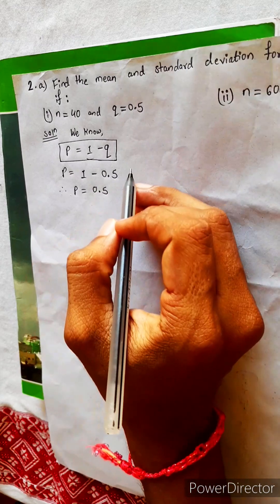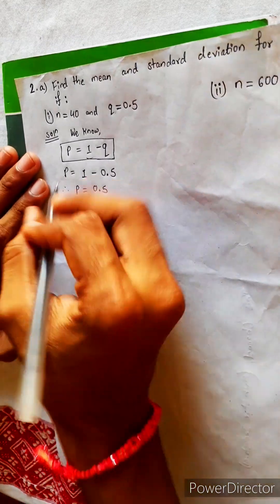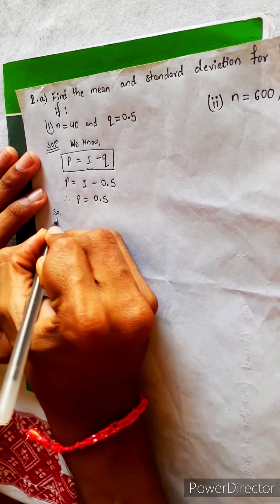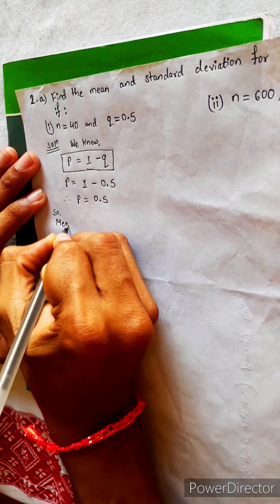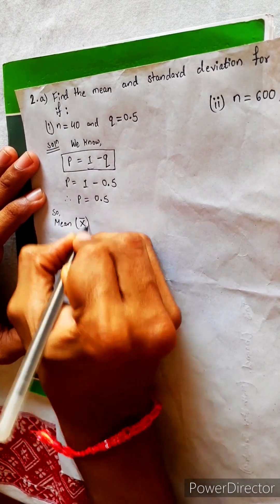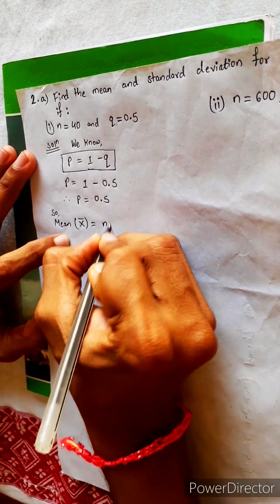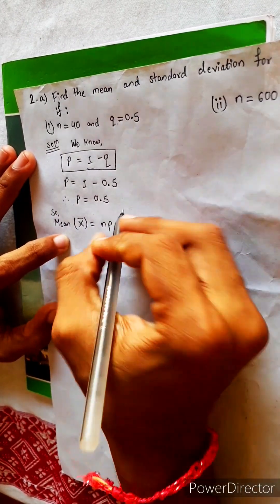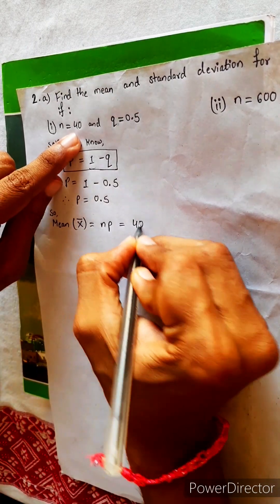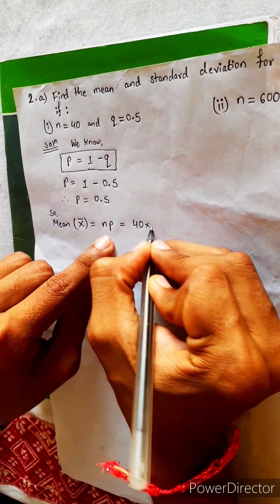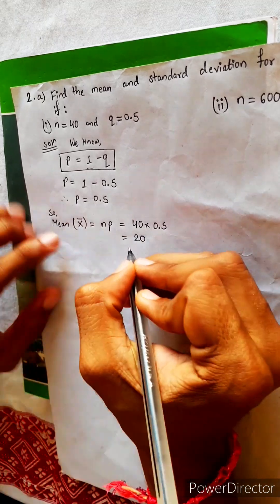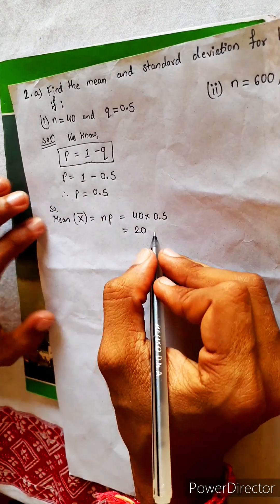So simple, and we know everything. Now we can find mean. Mean, or X-bar, equals to NP. N equals to 40, P equals to 0.5 — this is directly 20. No need to calculate.